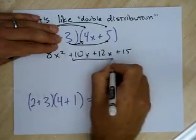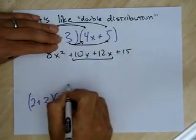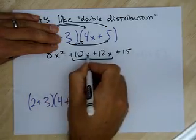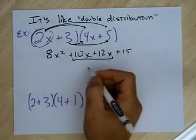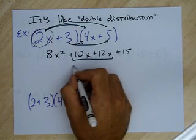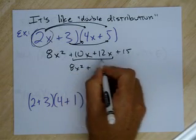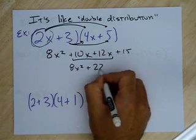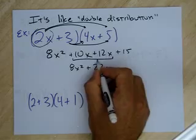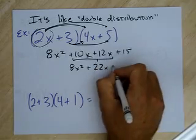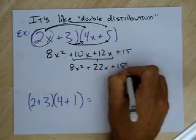Notice these two terms can combine — they're alike, they both have the same variable. I end up with 8x squared plus 22x combined, plus 15.